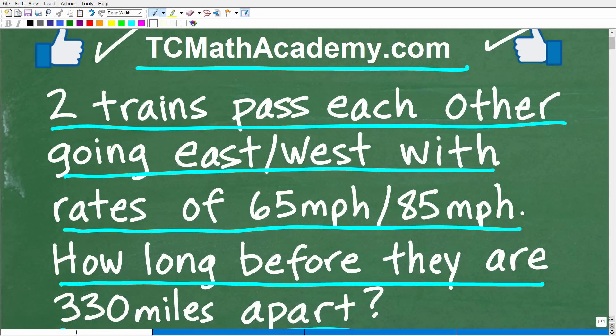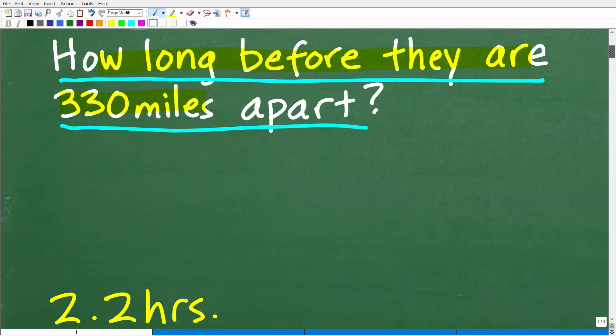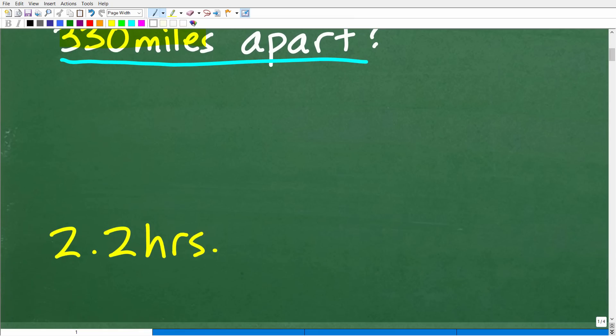Okay, so once again, let me just read this prompt just so there's no confusion. We have these two trains. They're obviously going in opposite directions. One of these trains is going 65 miles per hour. The other 85 miles per hour. How long before they are 330 miles apart? Well, let's go and see the answer. The correct answer is 2.2 hours.